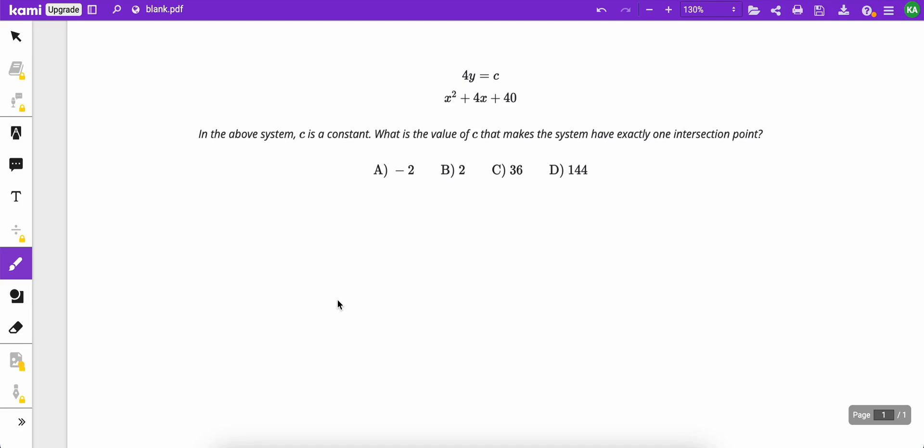Here's another system, but notice that there's a variable in there, c, whose value we need to find. The question says that c is a constant, and we want the value of c that makes this system have exactly one intersection point. So that's what we're going to look for on the graph when we go to Desmos, one intersection point.